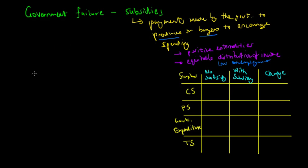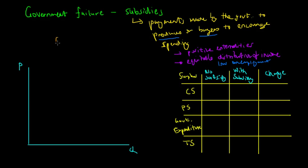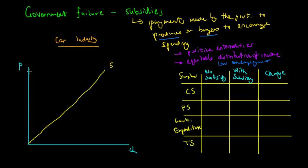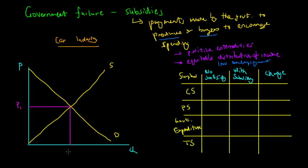Let's look at how this can apply to a supply and demand graph. The quantity of the good demanded is on one axis, and the price at which the good is demanded is on the other. Let's look at the car industry. The car industry is struggling relative to the rest of the world because of high labour costs, so domestic producers struggle to compete with international producers. For simplicity, we'll assume the supply curve is upward sloping and the demand curve is downward sloping. Before any government intervention, we have an equilibrium price of P1 for cars and an equilibrium quantity traded at Q1.